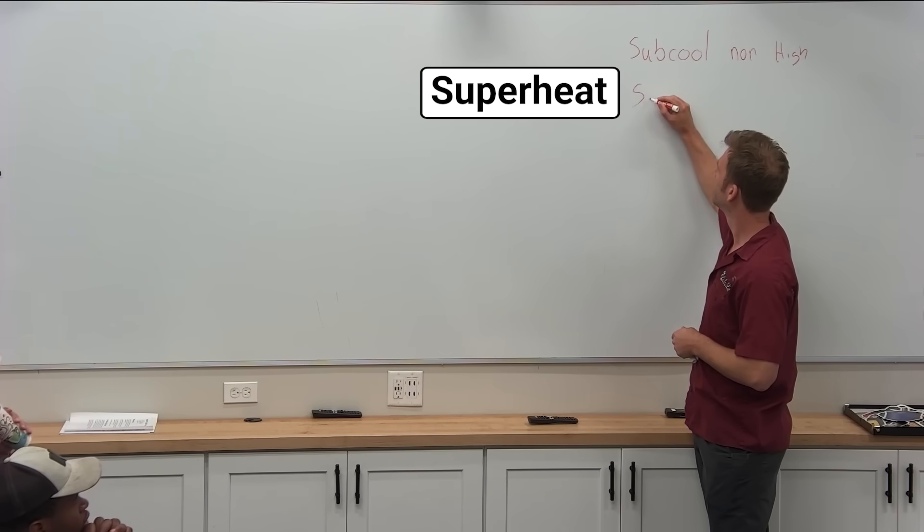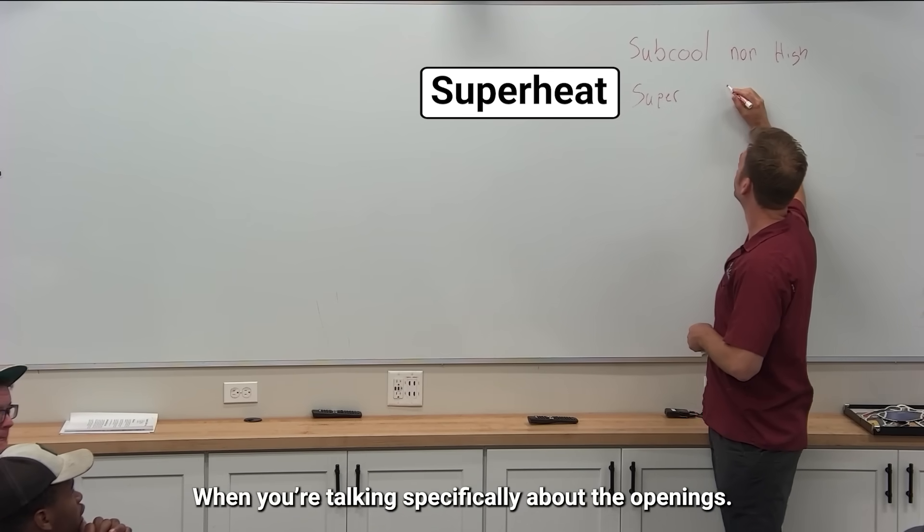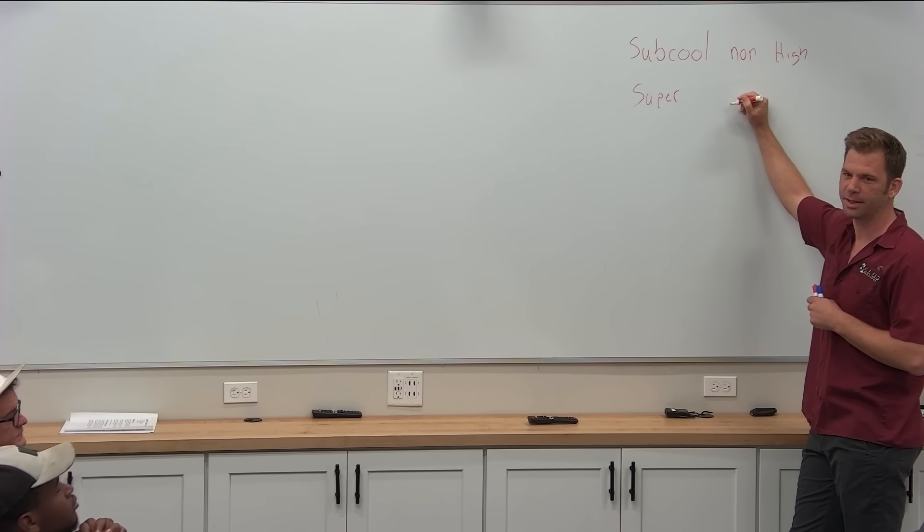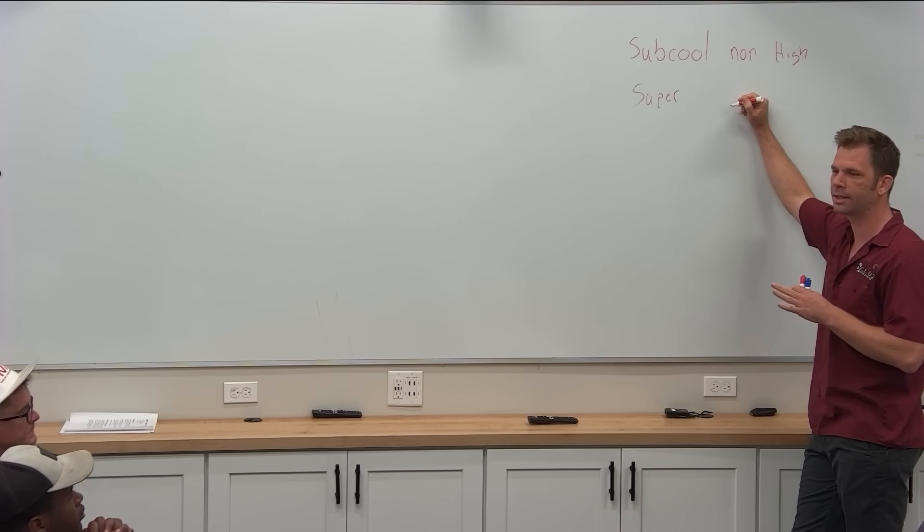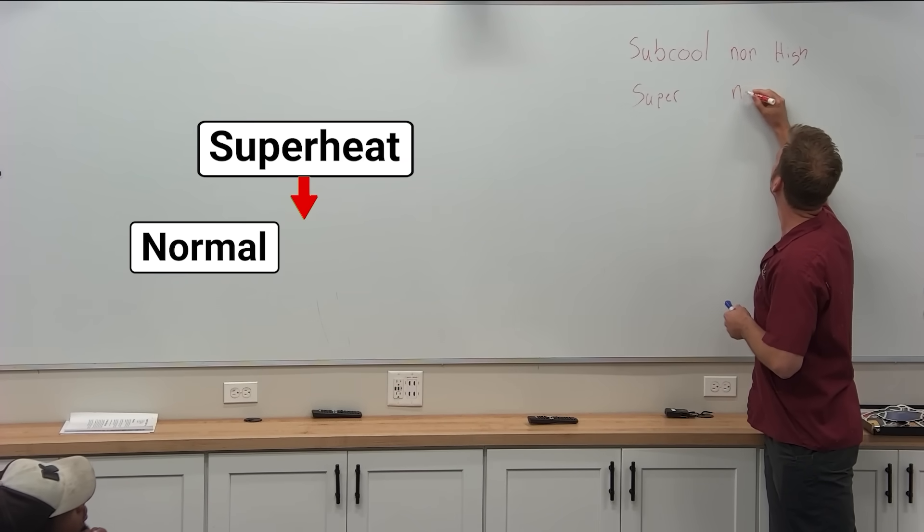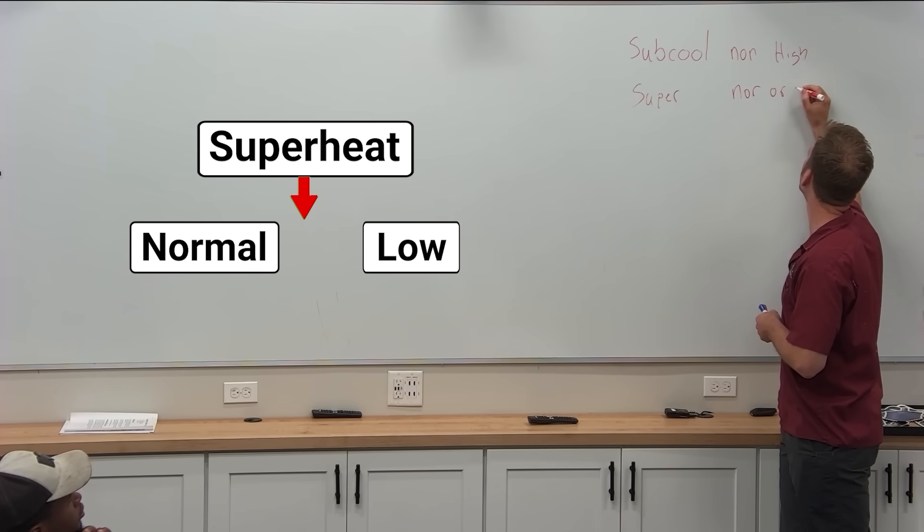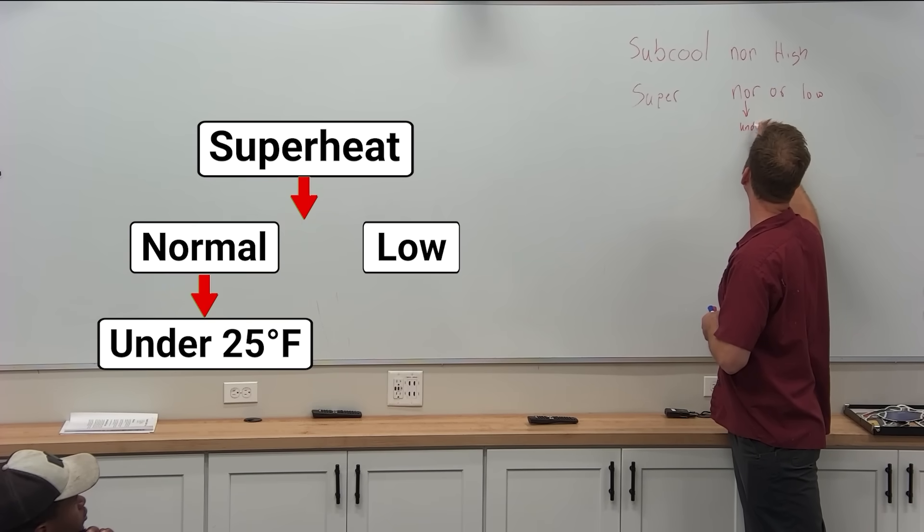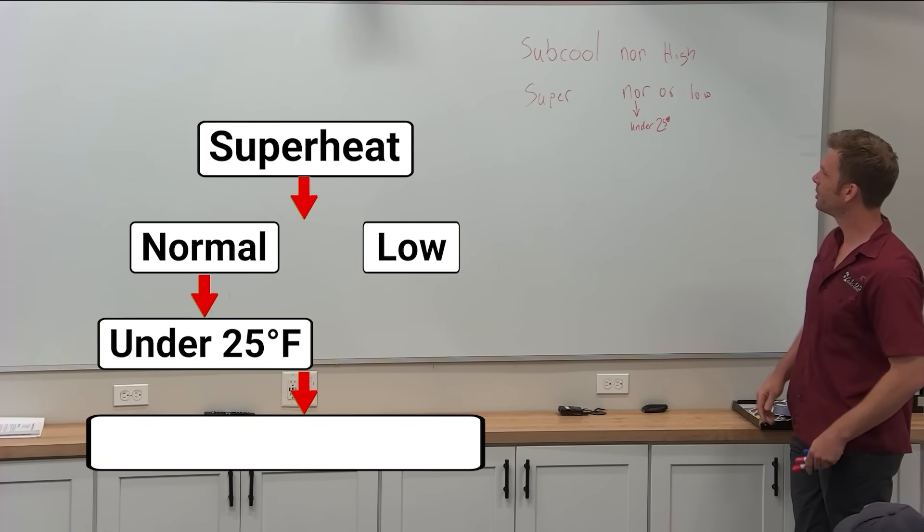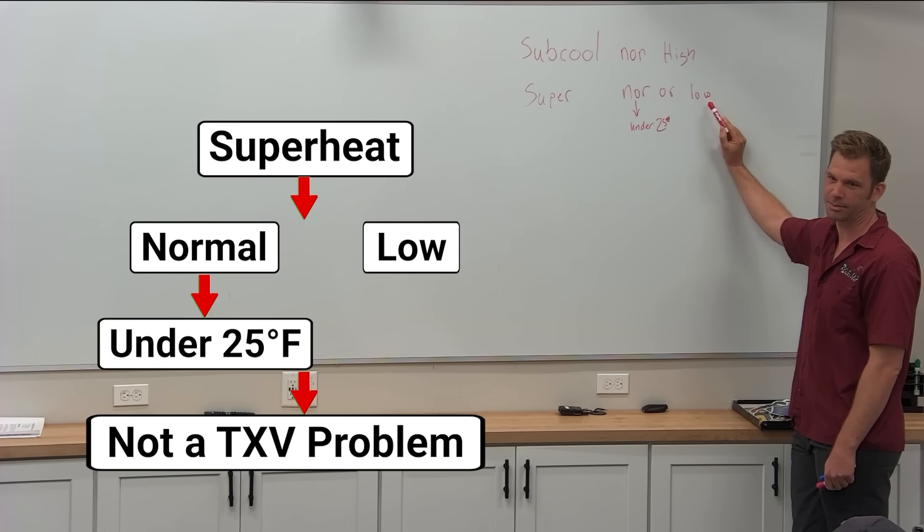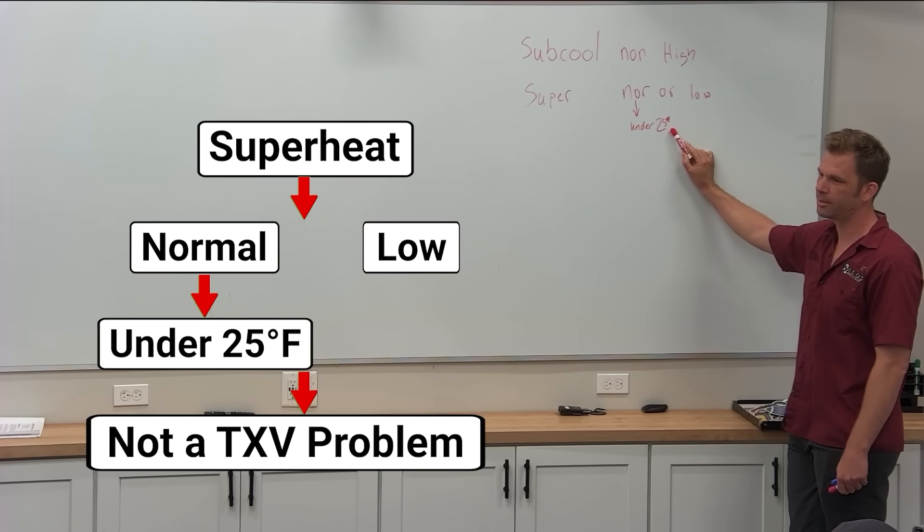Now we're going to go to superheat. I'll end just as a bonus on the open TXV situation, but forget that TXVs can overfeed open. It's all about TXVs closing down. Superheat - normal or low? Let's do normal under 25 degrees. If your superheat is normal or low, your TXV is doing its job. Something else is going on. Let's not be quoting the slightly low superheat TXVs.